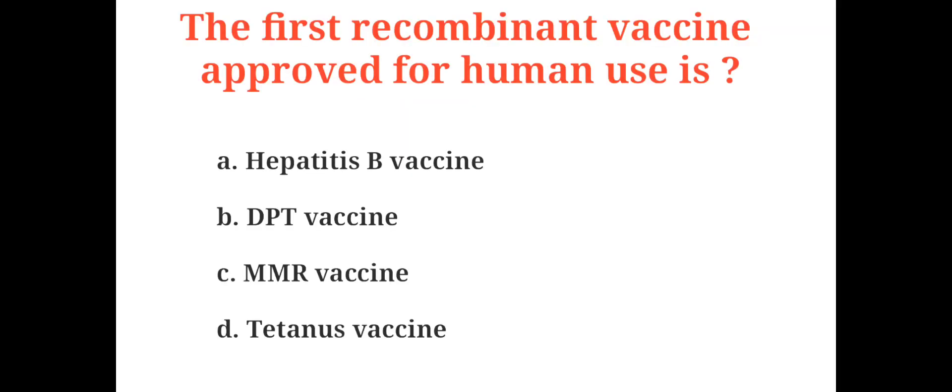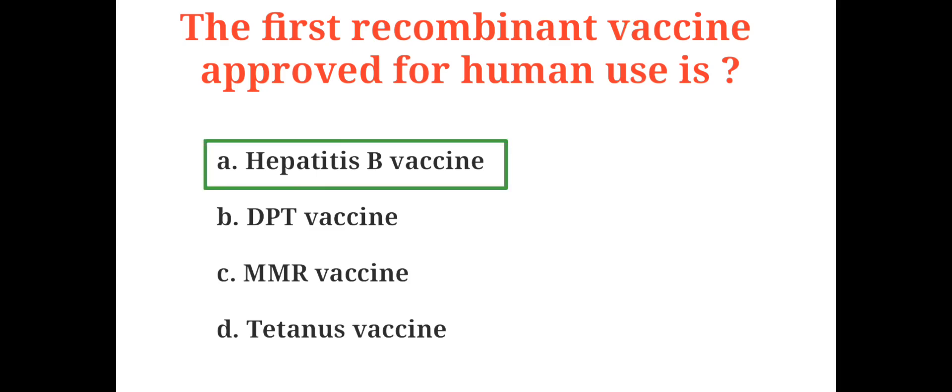The first recombinant vaccine approved for human use is A. Hepatitis B vaccine, B. DPT vaccine, C. MMR vaccine, D. Tetanus vaccine. And the correct answer is A. Hepatitis B vaccine.